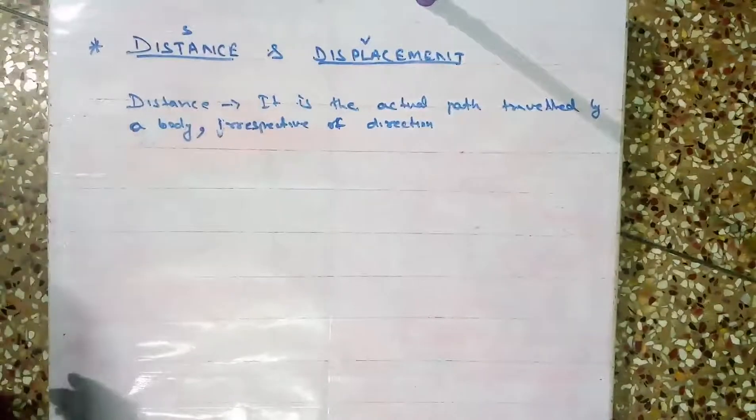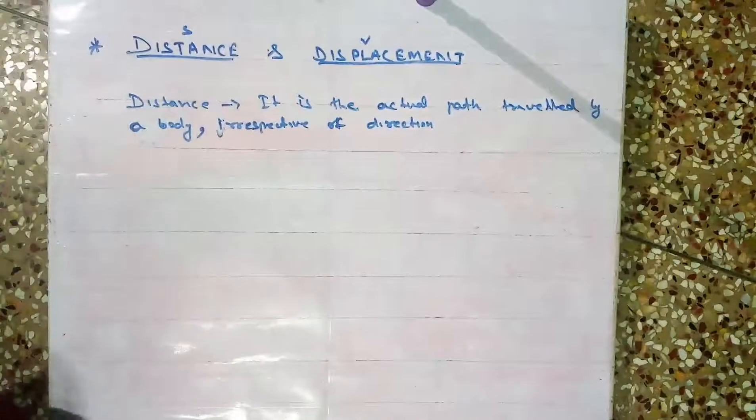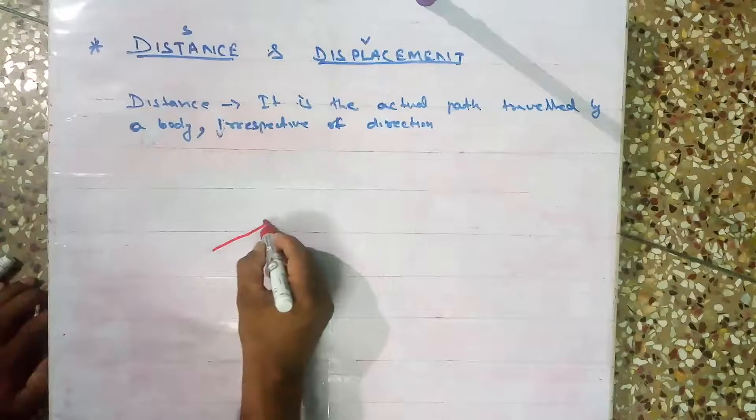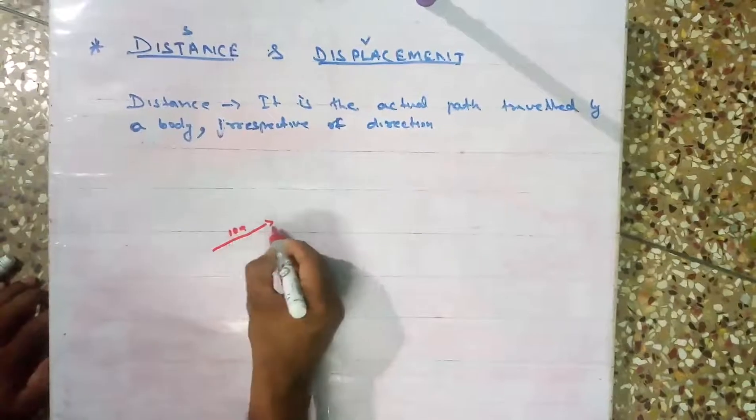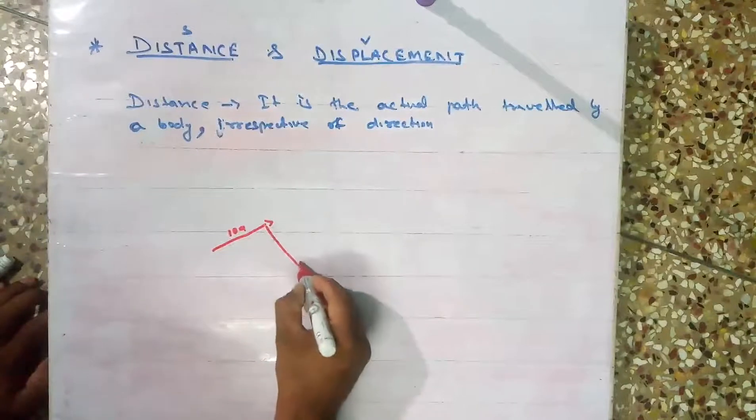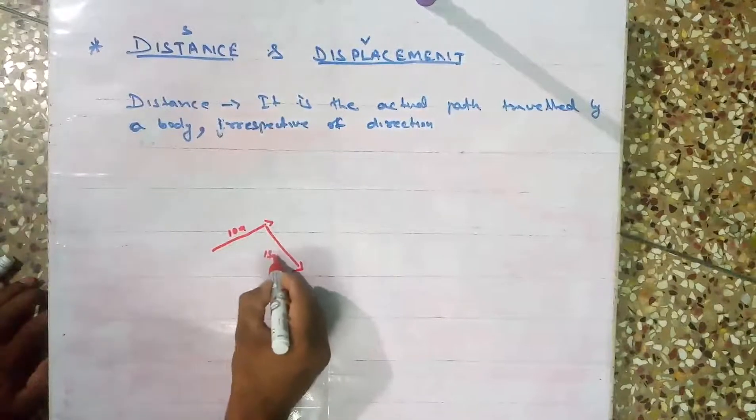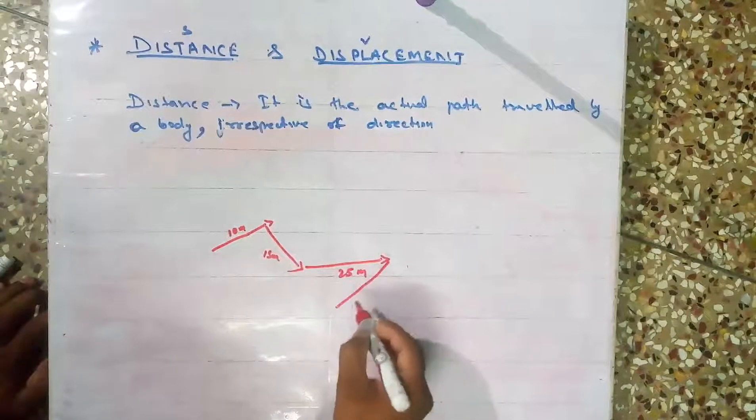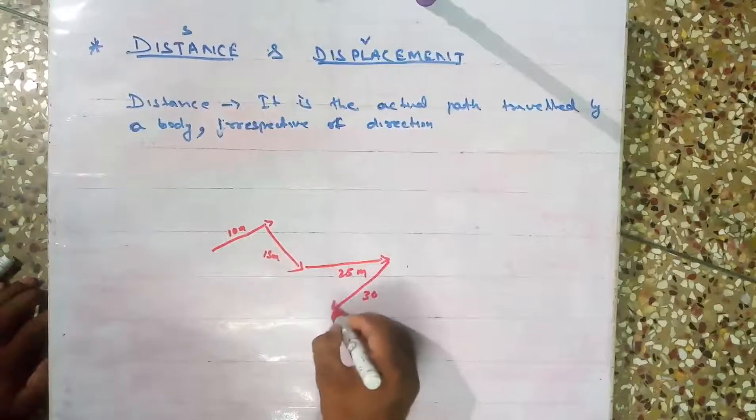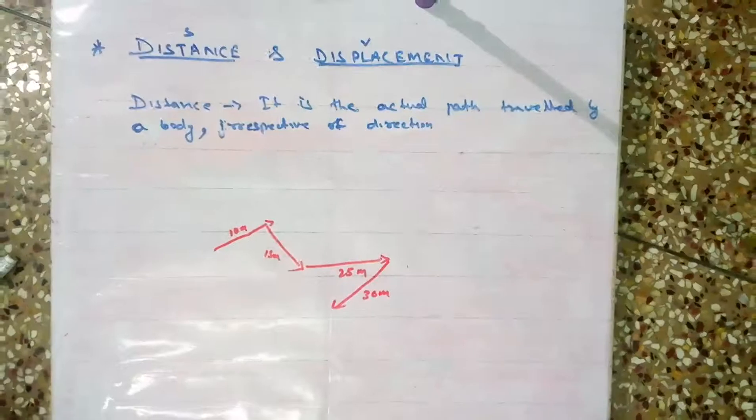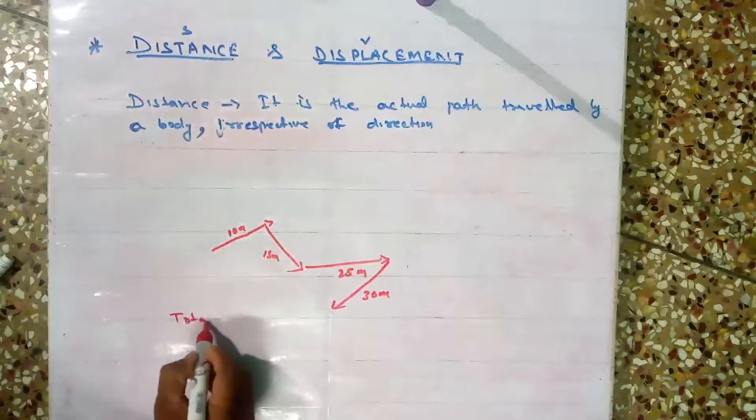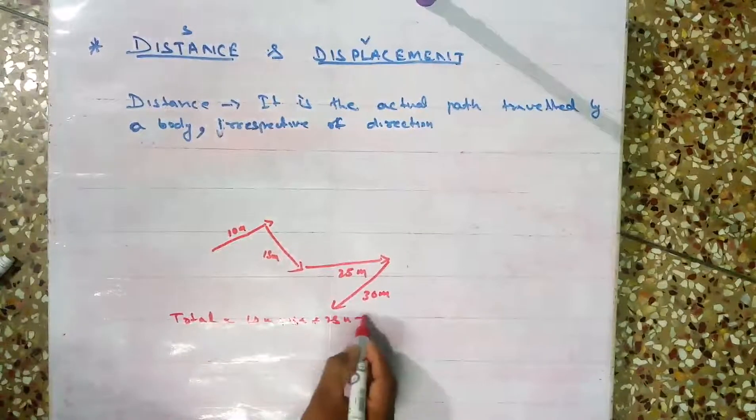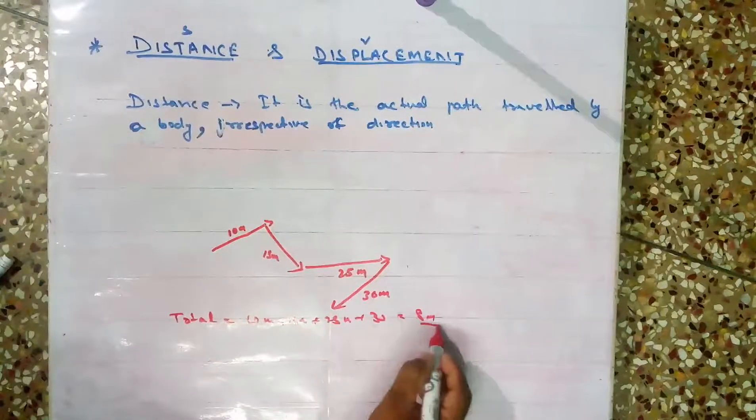Suppose the body is traveling - first he traveled this direction 10 meters, then he needs to take a turn. Then here he traveled 15 meters, here he traveled 25 meters, then again he traveled 30 meters here. So total path traveled - 10 meter plus 15 meter plus 25 meter plus 30 meter, that is 80 meter total. This is the distance.